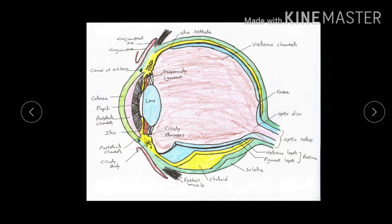The eyeball is mainly composed of three layers. From outer to inner aspect, the most outer layer is termed as the tunica fibrosa. Inner to that is a layer known as the tunica vasculosa, and the most inner layer is known as the retinal layer. The tunica fibrosa has two components: the cornea, forming one-sixth of the eyeball globe, and the remaining five-sixths formed by the sclera.